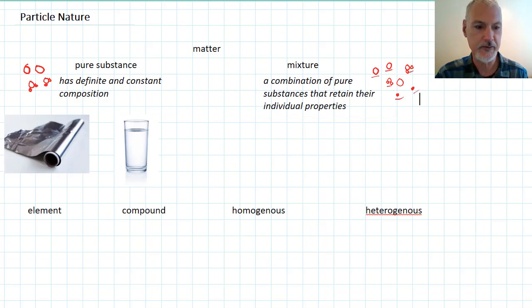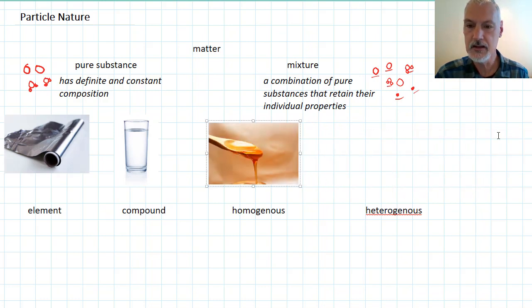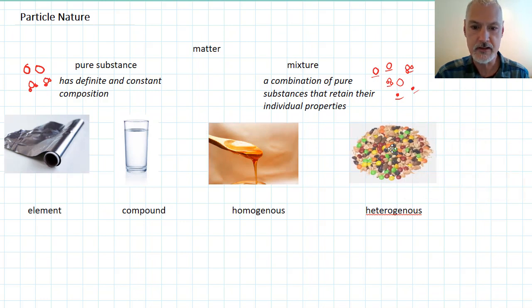Here are some examples of things that would fit that description. Honey. A mixture of sugars and water. In this conglomeration of peanuts, and Smarties, and raisins. Again, a bunch of individual properties from individual substances.